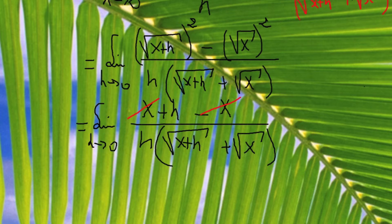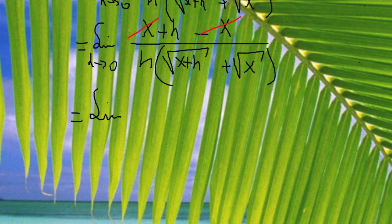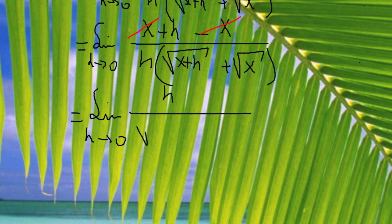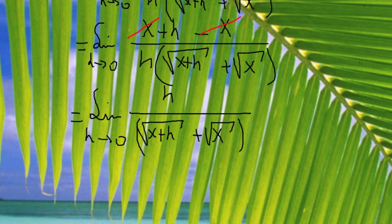So I'm left with limit as h goes to 0 of h divided by h times the quantity square root of x plus h plus square root of x. The h on top and h on the bottom cancel.